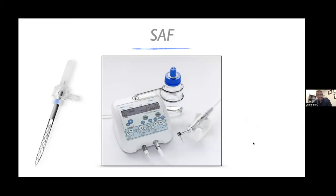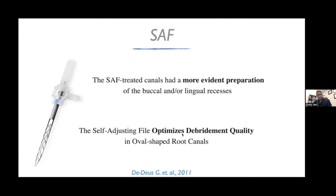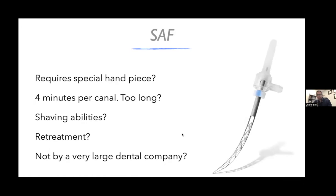However, the SAF was a bit complicated to use because it came with a special handpiece through which sodium hypochlorite was expressed. It was not very user-friendly — the handpiece would corrode and it would take a lot of time. It was very efficient at debridement and at reaching microbial control, but due to technicalities it did not gain a lot of popularity, and today, sadly, it is no longer used in our endodontic field.